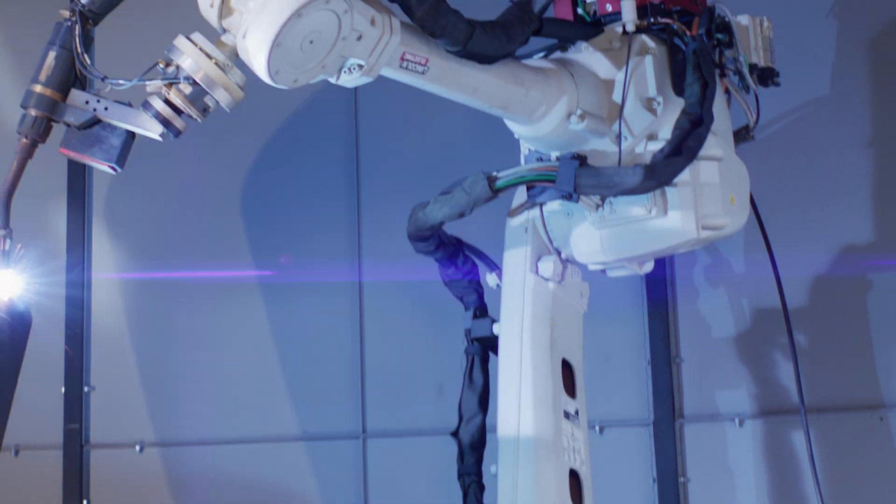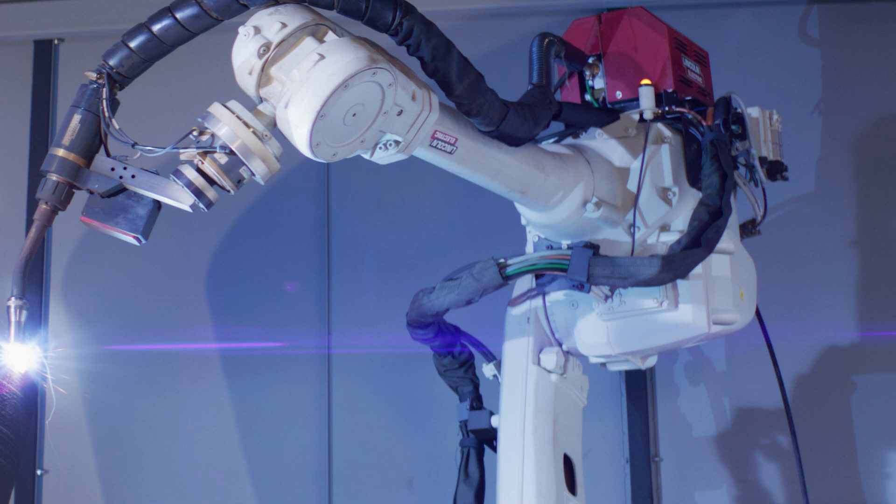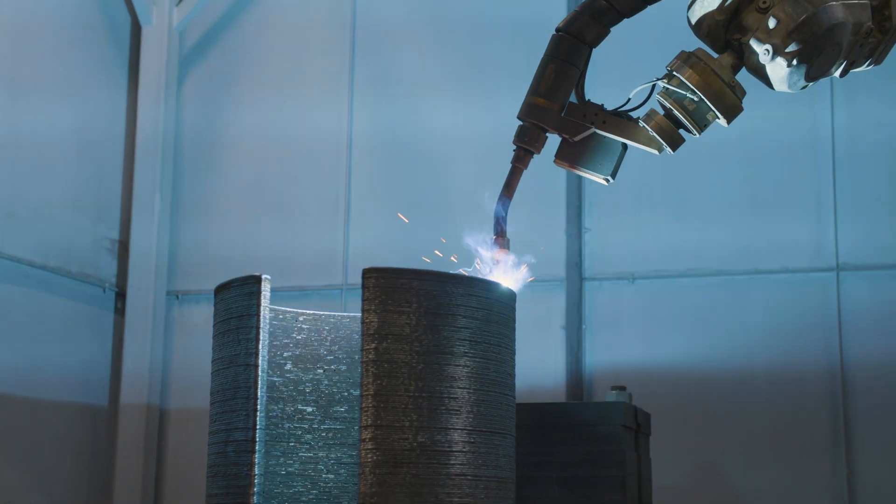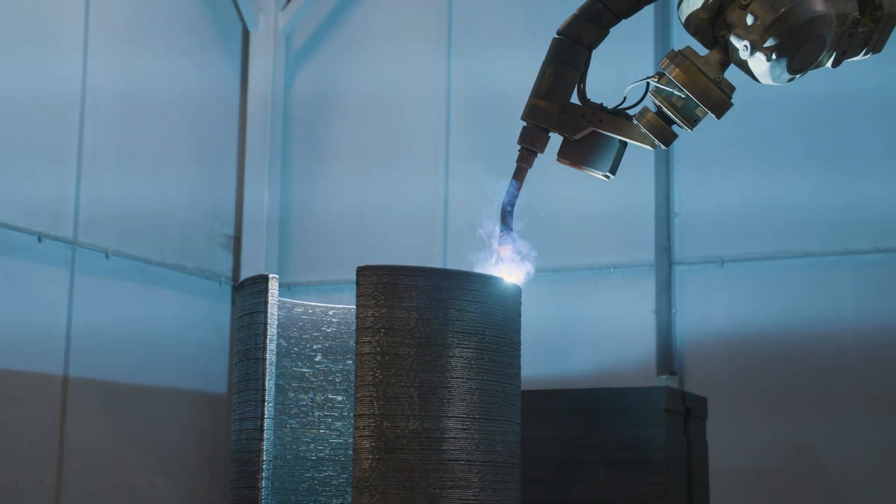Wire arc 3D metal printing or additive manufacturing is a process where we build parts by stacking metal, one weld bead at a time, one layer at a time, until we end up with the parts geometry that we need.